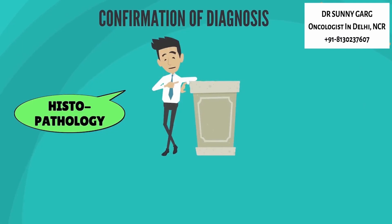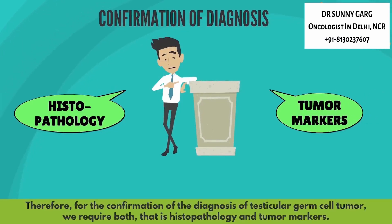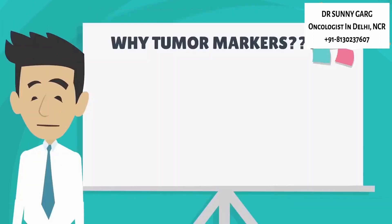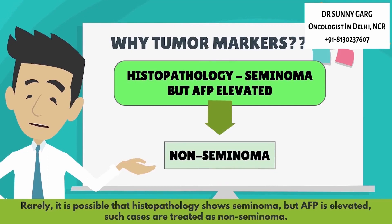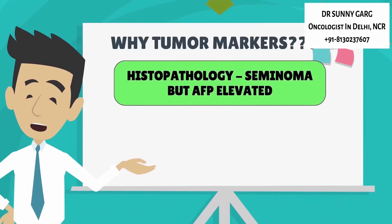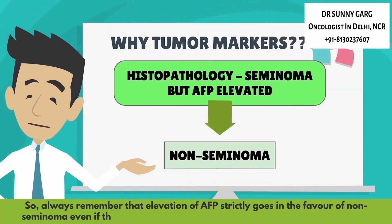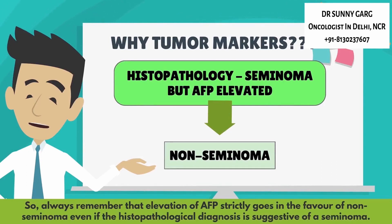Therefore, for confirmation of the diagnosis of testicular germ cell tumor, we require both histopathology as well as tumor markers. Rarely, it is possible that histopathology is suggestive of seminoma but serum tumor markers show AFP elevation. Such cases are diagnosed and treated as non-seminoma. Always remember that elevation of AFP strictly goes in favor of non-seminoma, even if the histopathological diagnosis is suggestive of a seminoma.